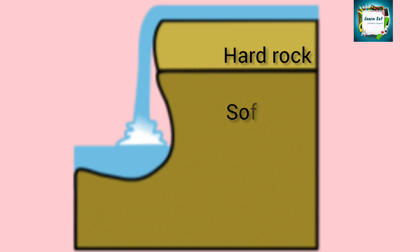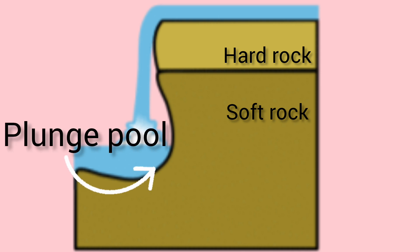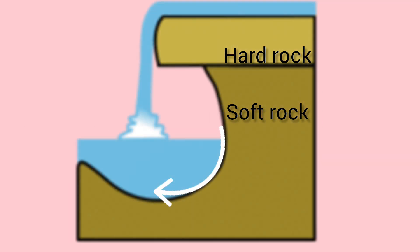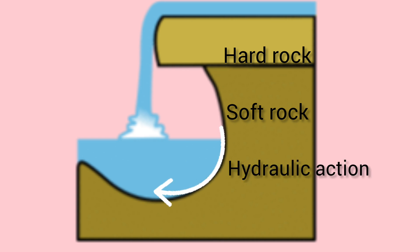Falling water and rock particles erode the soft rock below the waterfall, creating a plunge pool. The soft rock is undercut by erosional processes such as hydraulic action and abrasion.